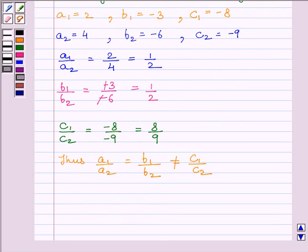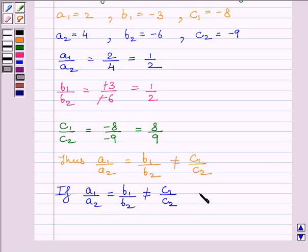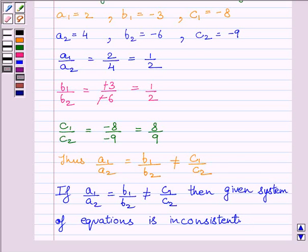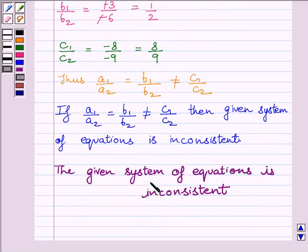Now, by the key idea, we know that if A1 upon A2 is equal to B1 upon B2 but not equal to C1 upon C2, then the given system of equations is inconsistent. So the given system of equations is inconsistent. This is our final answer.